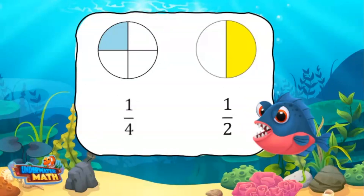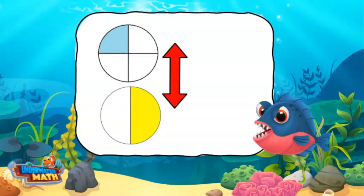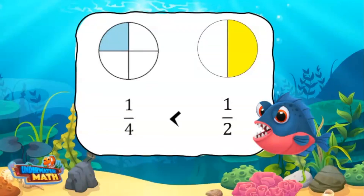Here are two unit fractions: 1 fourth and 1 half. The first model is split into four equal parts with one part being represented. The second model is split into two equal parts with one part being represented. I am going to move the fraction model 1 half over. I am trying to determine which model has more area covered. It is the 1 half model. 1 fourth is smaller than 1 half.